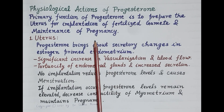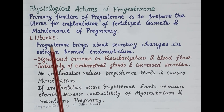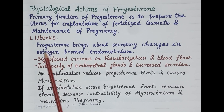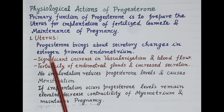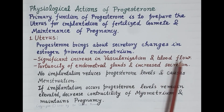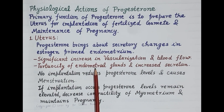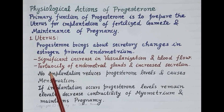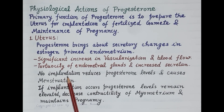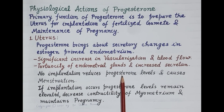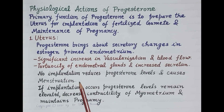Now let's study the physiological actions of progesterone. First is the effect on the uterus. As already discussed, progesterone makes the endometrium secretory — it brings about secretory changes in estrogen-primed endometrium. Progesterone significantly increases vascularization and thus increases blood flow. The endometrial glands increase their secretion, causing tortuosity of endometrial glands and increased secretion. If the egg is not fertilized and no implantation occurs, progesterone levels fall.